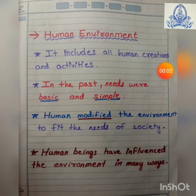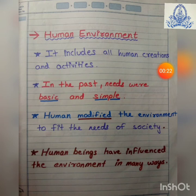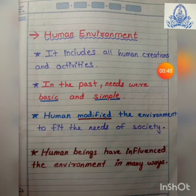Human environment refers to the artificial environment created by humans — for example, buildings, roads, and cities. Human beings have always adopted their surrounding environment and also affected it in many ways. In the past, needs were basic and simple, so the environment was not affected that much. But humans modified the environment to fit the needs of society — for example, land was cleared to grow crops, and factories and power plants were built.